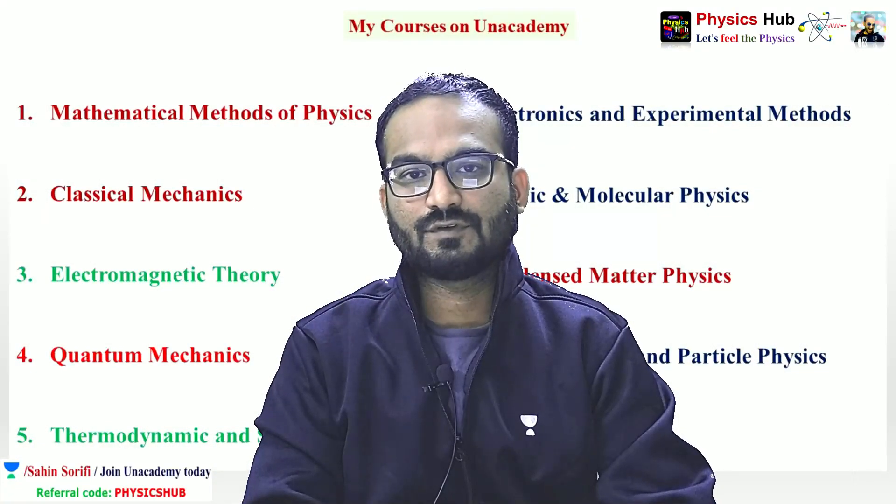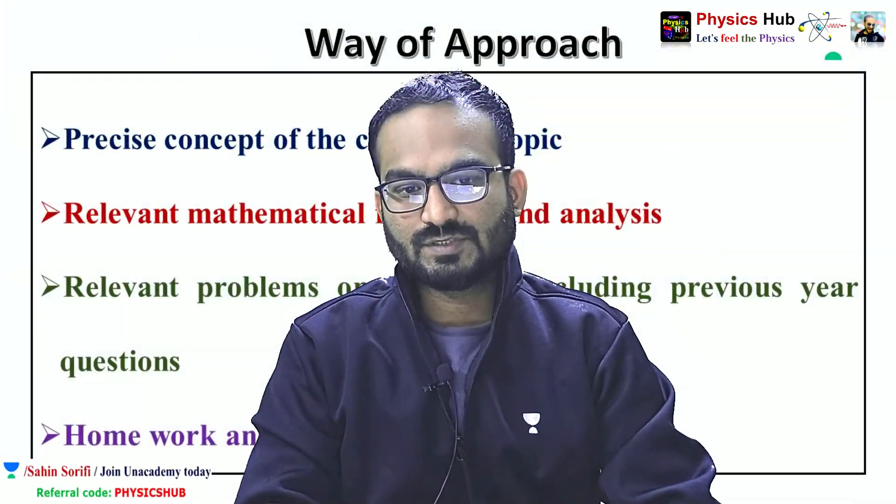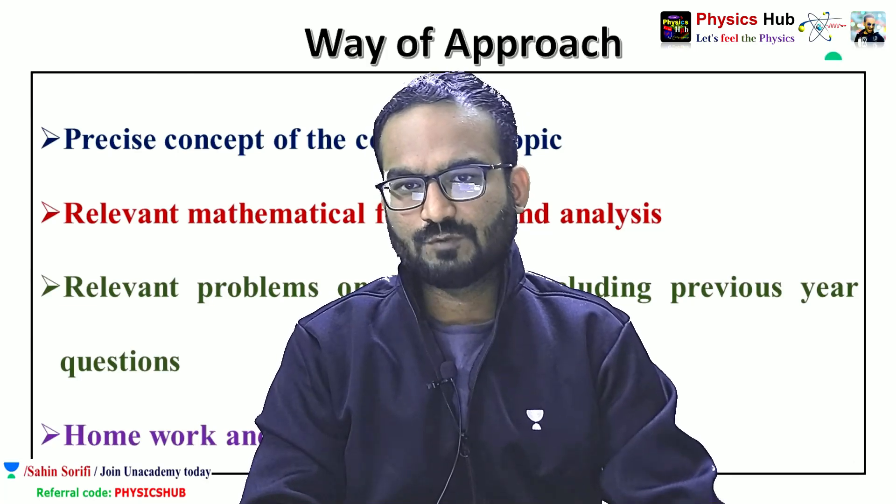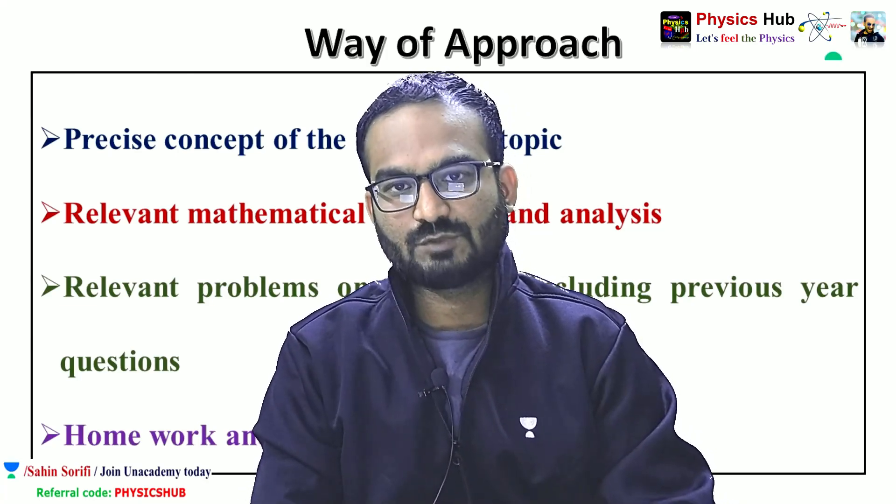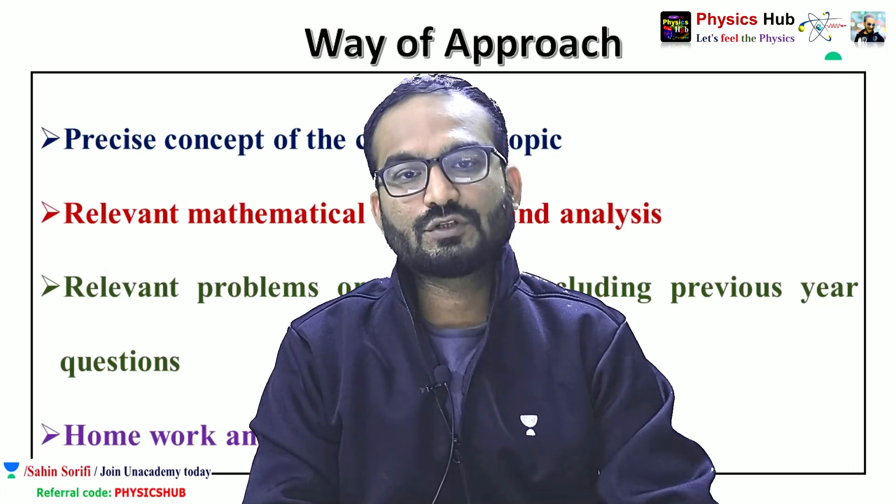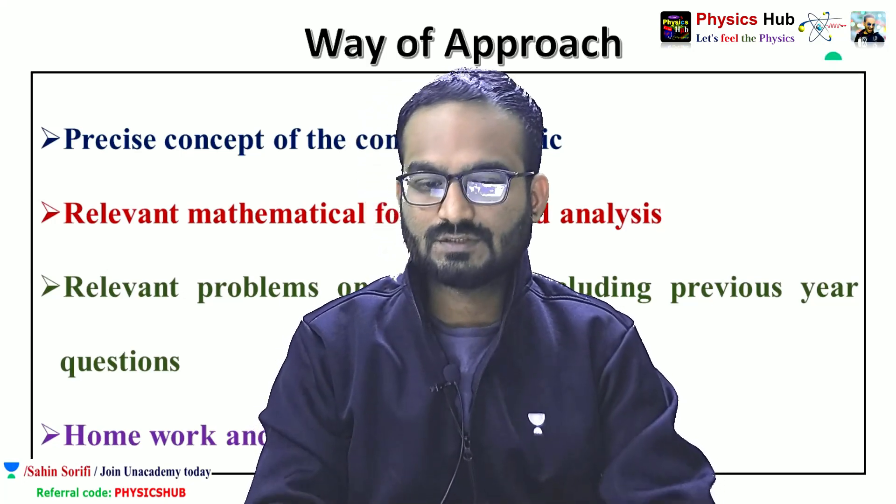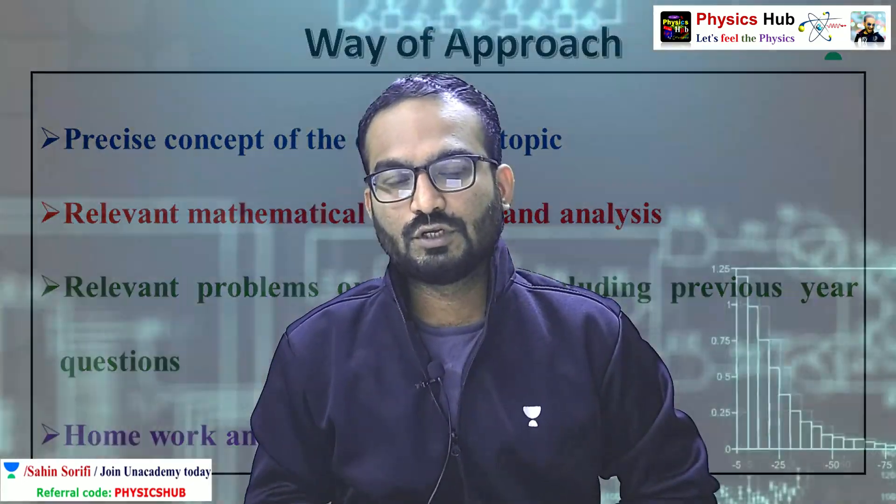I cover all the 9 units of CSIR NET Physical Science level. My approach is I precisely give you the concept of the concerned topic. Then I discuss the relevant mathematical formula and do the analysis. The relevant problems based on the topic including previous year questions are discussed. Homework and assignments are also given.